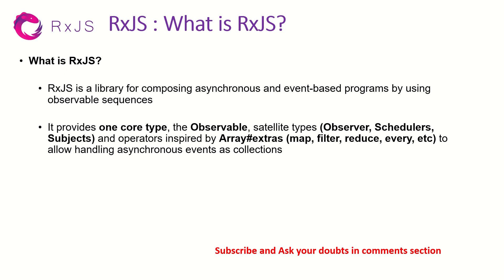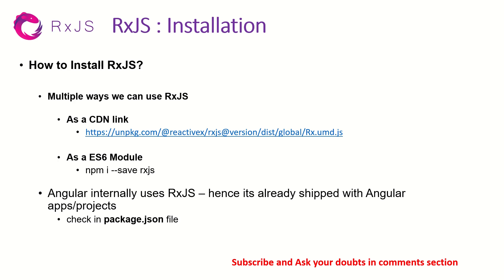So don't worry even if you don't follow some of it now. Let's talk about installation. There are multiple ways you can use RxJS, and you can use it literally in any project that you want. A lot of times people think RxJS is built inside only Angular — that's not true. You can use it as a CDN link, which means you can just copy the link and include it as a script tag. Source equals this link, and you can use it just like any other JS file. It's just another JS file you include in your application.